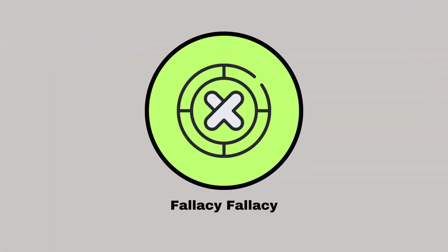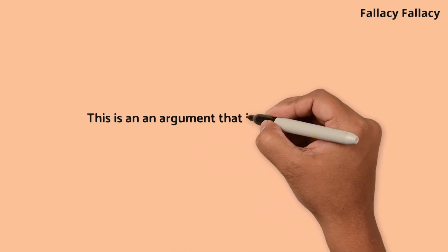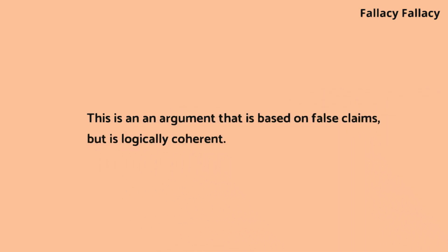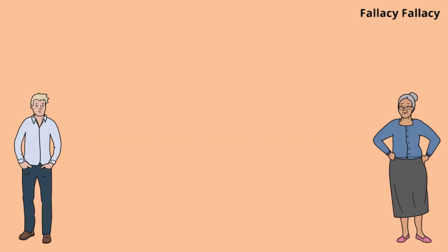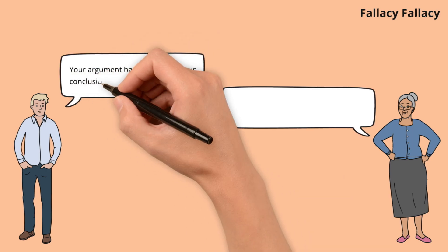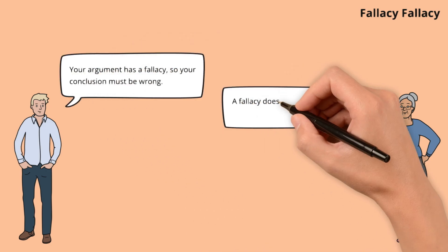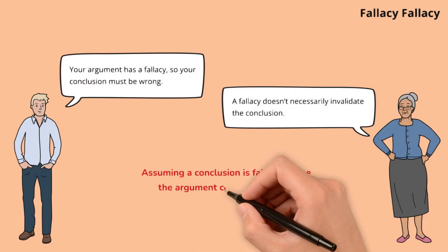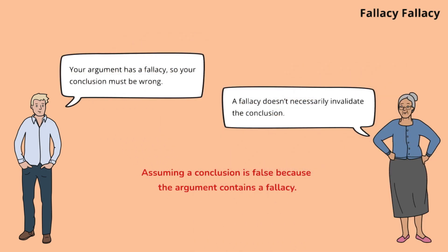Fallacy fallacy. This isn't an argument based on false claims, but is logically coherent. Owen wrongly concludes that a fallacy in an argument means the conclusion is false. Natalie corrects this misunderstanding, teaching us that a faulty argument can accidentally reach a true conclusion.